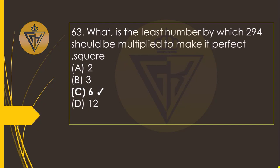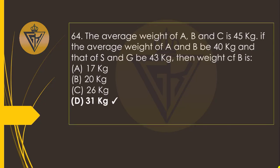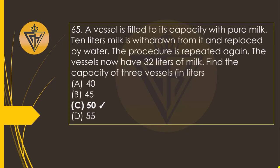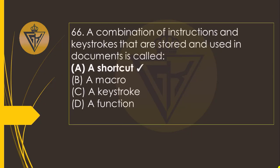What is the least number by which 294 should be multiplied to make it a perfect square? The option C. A vessel is filled to its capacity with pure milk. 10 liters of milk is withdrawn from it and replaced by water. The procedure is repeated again. The vessel now has 32 liters of milk. Find the capacity of the vessel in liters — the option C: 50 liters.